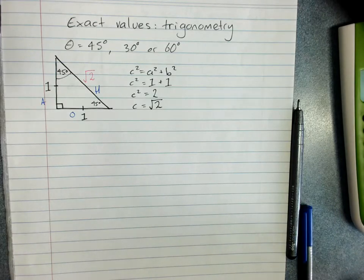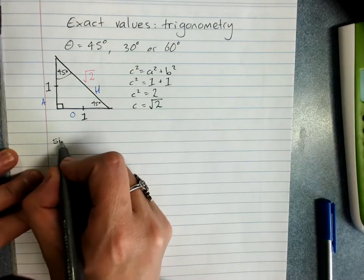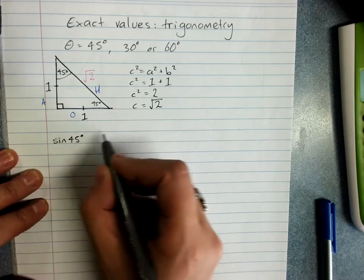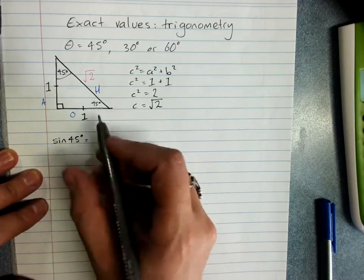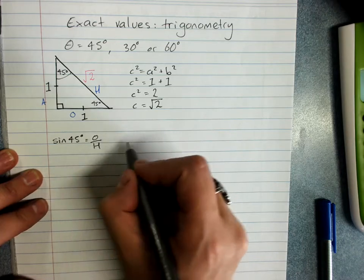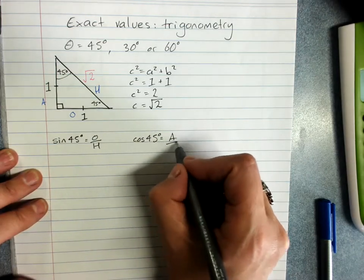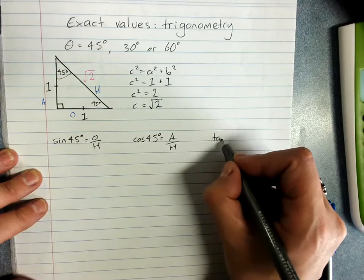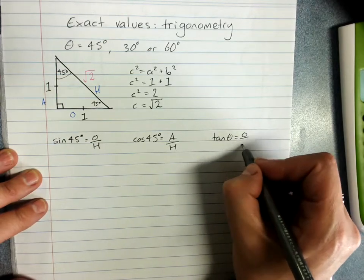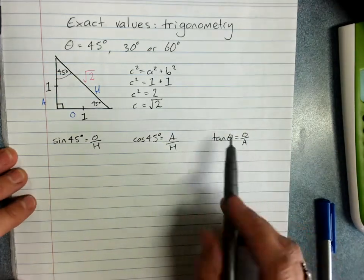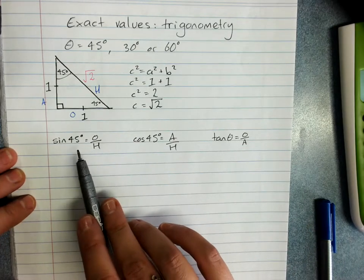And we take our ratios. Sine of 45 degrees - sine of the angle is opposite over hypotenuse. Cos of the angle is adjacent over hypotenuse. Tan of the angle is opposite over adjacent.